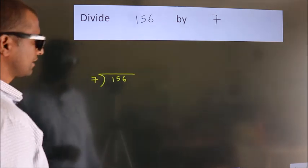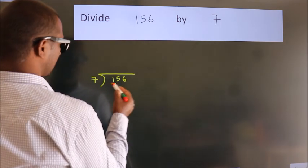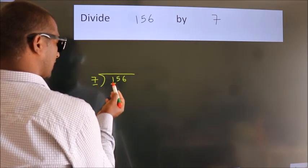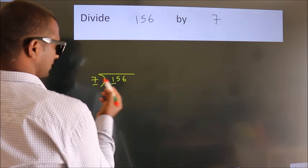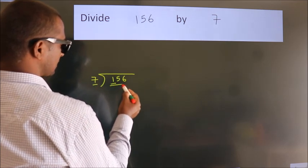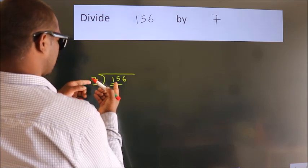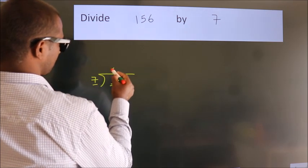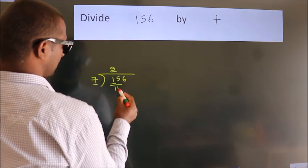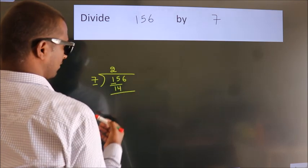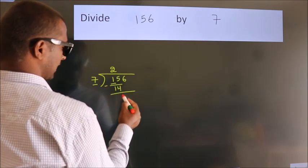Next. Here we have 1, here 7. 1 is smaller than 7, so we should take 2 numbers: 15. A number close to 15 in the 7 table is 7 twos, 14. Now we should subtract. We get 1.